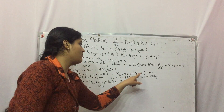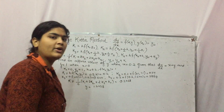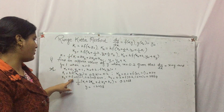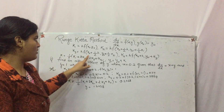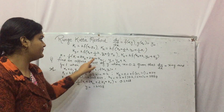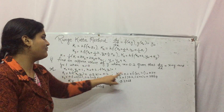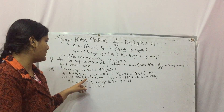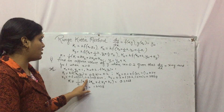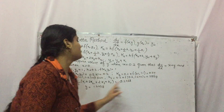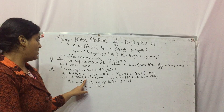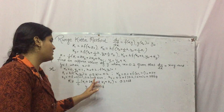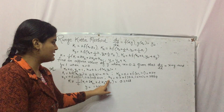K3 = H · F(x₀ + H/2, y₀ + K2/2). H/2 = 0.1, so x = 0.1. y₀ = 1, K2/2 = 0.12, so y₀ + K2/2 = 1.12. F(x, y) = x + y = 0.1 + 1.12 = 1.22. Multiplying by 0.2 gives K3 = 0.244.